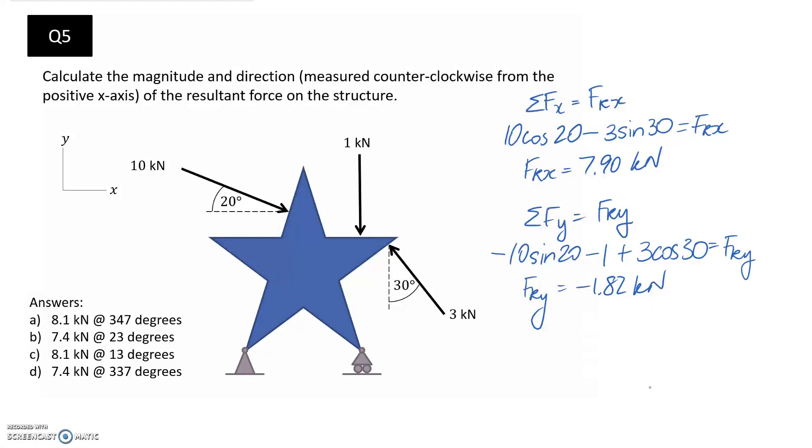So let's go ahead and draw it. We found this one to be positive, so that would suggest it's in the positive x-direction. So 7.90. This one's going down. 1.82.